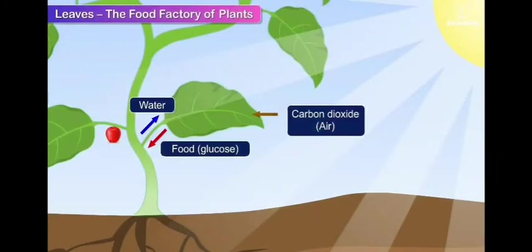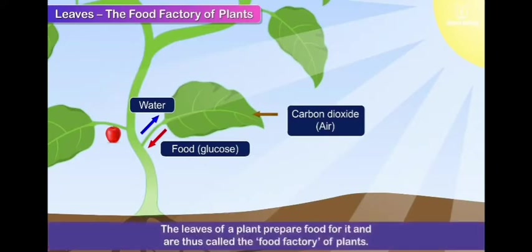Let us study the leaf which is a food factory of a plant. Why do we call it a food factory? Because all the food for the plant is prepared by the leaf only. Not any other part is making the food. Only the leaf is making the food.